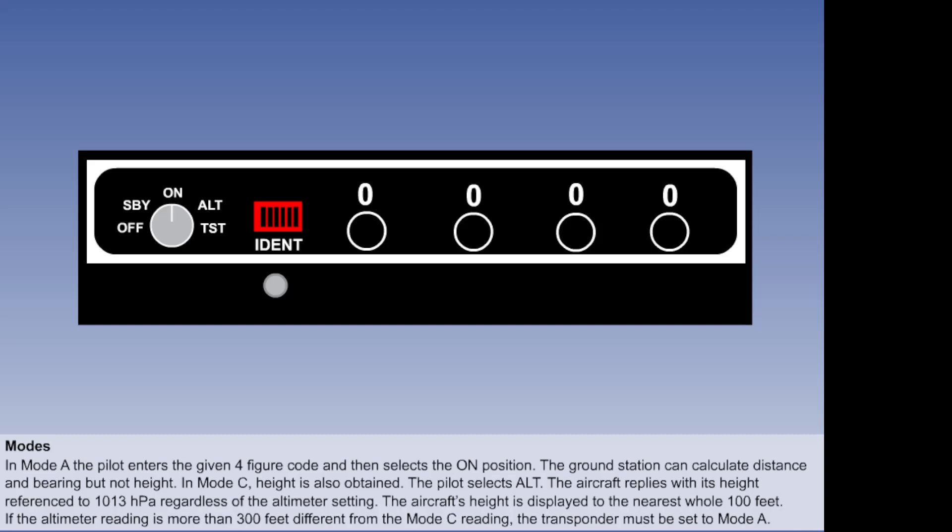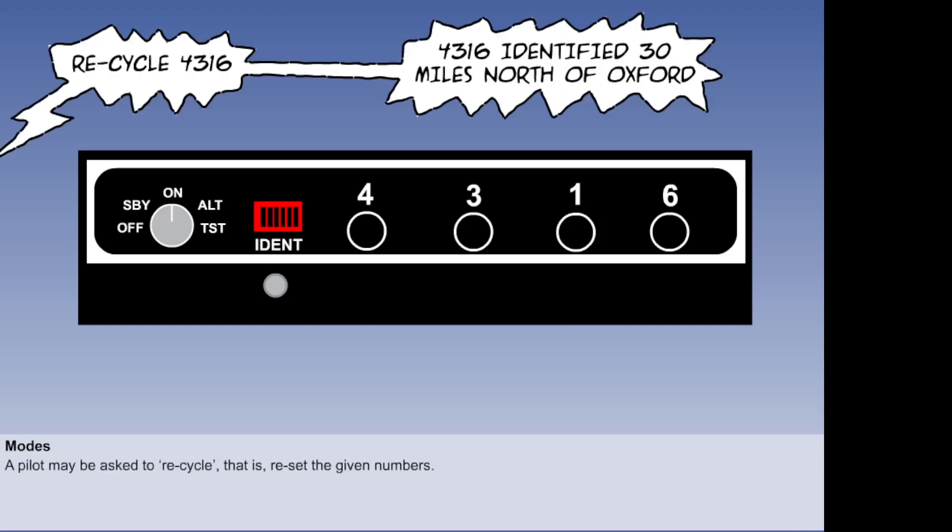The radar screen displays the aircraft's height to the nearest 100 feet. If, when asked to verify the aircraft height, the altimeter reading is more than 300 feet different from the mode Charlie reading, the pilot will be instructed to switch off mode Charlie, go to mode Alpha and display 0000 on the transponder. In the UK and most of Europe, the limit is 200 feet. If the operator is not satisfied with the transponder reply, he may ask the pilot to recycle. That is, reset the numbers or set different numbers.